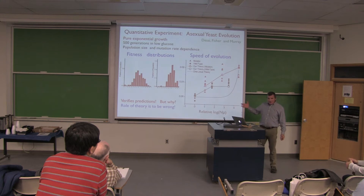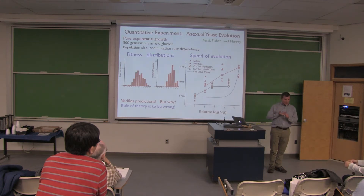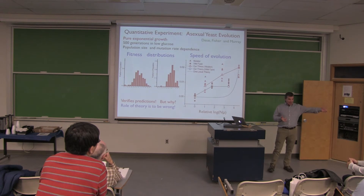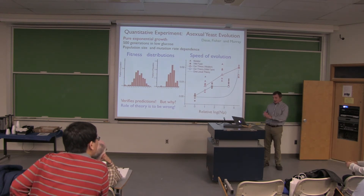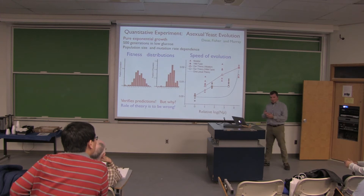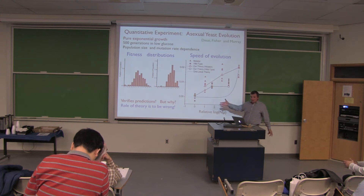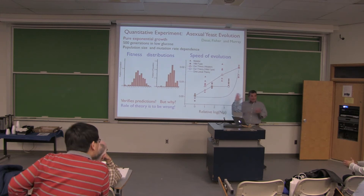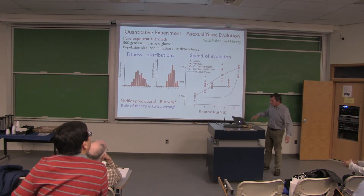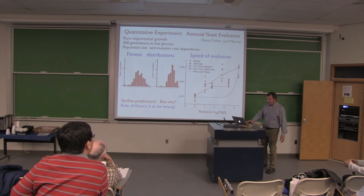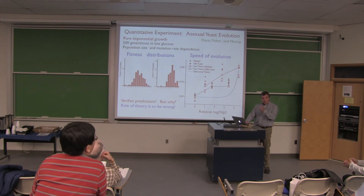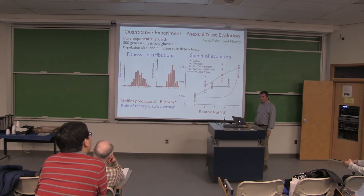He was also able to measure distributions of fitness in the population — like the distribution over different steps on the staircase, but on a linear scale. Rather embarrassingly, the theory verified the predictions. But the problem is the theory is definitely wrong. There are deleterious mutations, there are many different mutations possible all of different heights, and all the assumptions of the theory are clearly wrong. So either there's something more deep going on or we were just lucky — but this really does take one's attention to think about it more seriously.